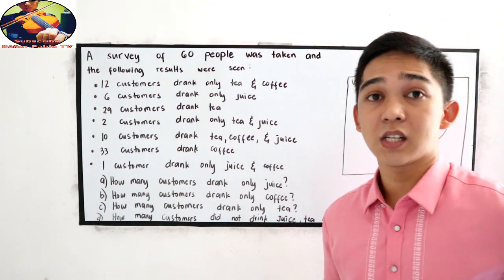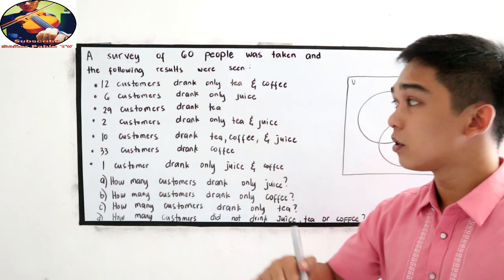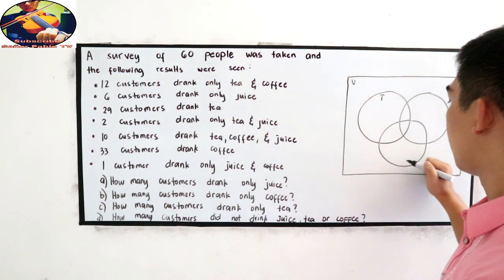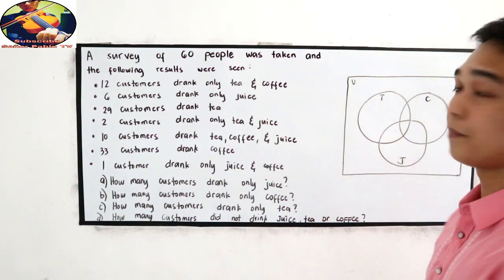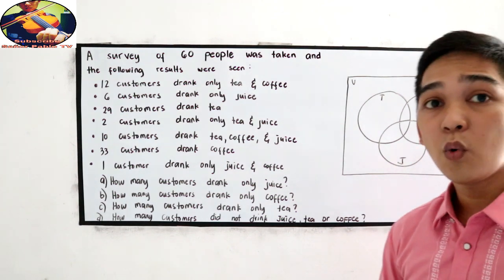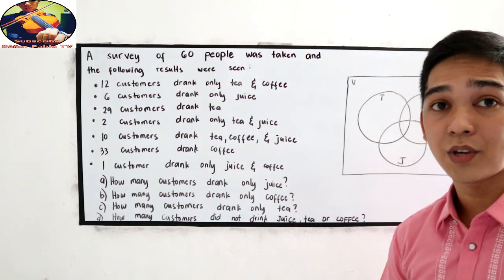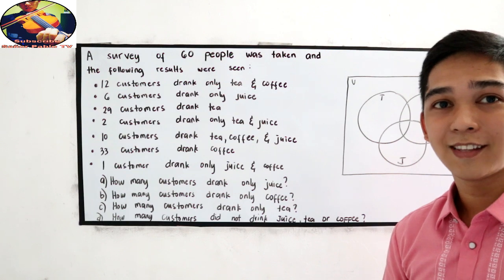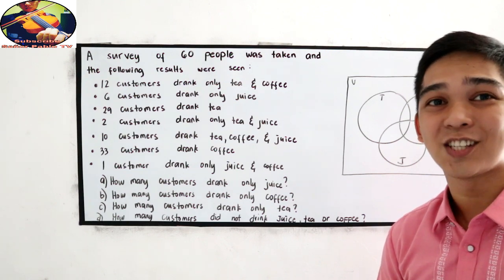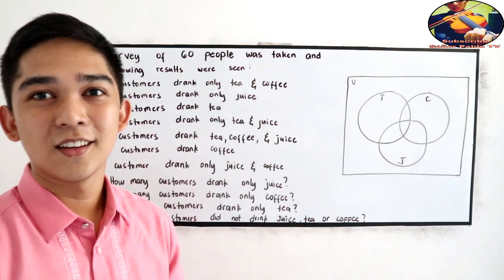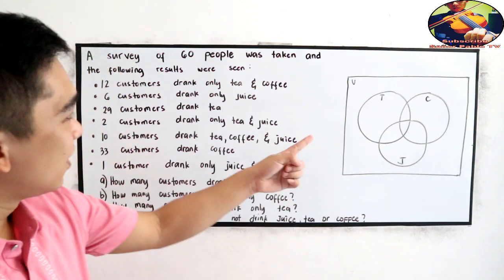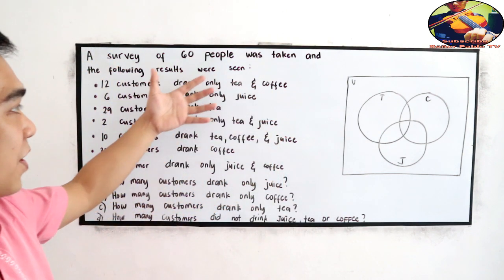So obviously we have 3 events. We have tea, juice and coffee. If you want to solve the problem then you can pause the video. Now let's check your work after you are done answering. And now let's check your work. Let's go back to our given.